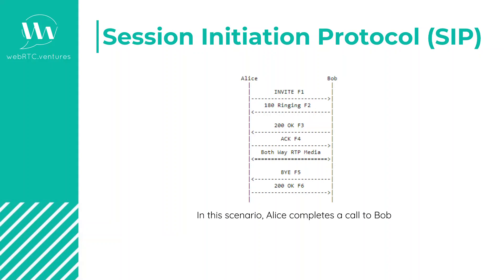For example, Alice is sending a SIP invite to Bob at the beginning. An invite typically means the initiation of a call, at which Bob will respond back sending a 180 response, meaning the phone is ringing at the other end. Once the communication is successful, Bob will send back a 200 OK and they will be able to establish a two-way RTP media.